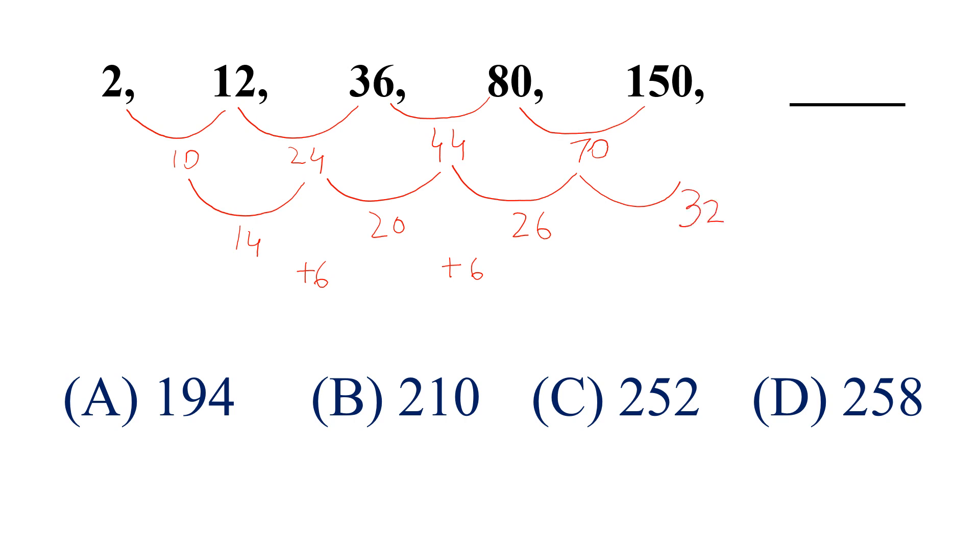Now, how we will find this term? Look at the pattern. 12 plus 10 plus 14, this is 36. Then 36 plus 24, plus 20, this is 80. Now, 80 plus 44, plus 26, this is 150.